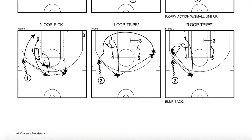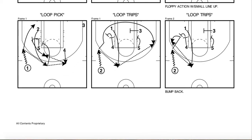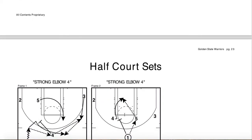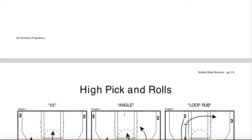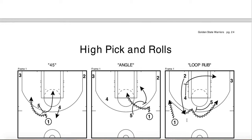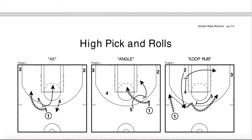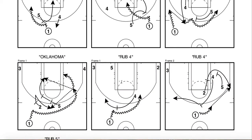Loop in the NBA is key for a zipper screen — something I talked through in my terminology series. Loop is this zipper cut right here. Loop trips would be into triples. Loop pick looks like into a flex action. So loop just indicates the zipper screen. There are a lot of words that are commonplace terminology around the NBA. Loop, zipper, rub, high pick-and-roll — maybe three different terms around the league. Some people call it loop, some call it zip, some call it fist for the high pick-and-roll. Generally the terminology is pretty common — it's a copycat league. A lot of teams have similar play calls.